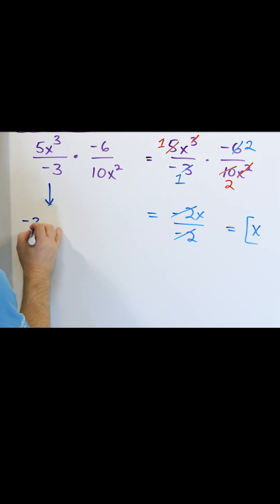5 times negative 6 is negative 30x cubed. On the bottom, negative 3 times 10 is negative 30x squared. You can see right away the 30s are going to cancel. You can see right away these signs are going to divide away. The x squared is going to cancel.